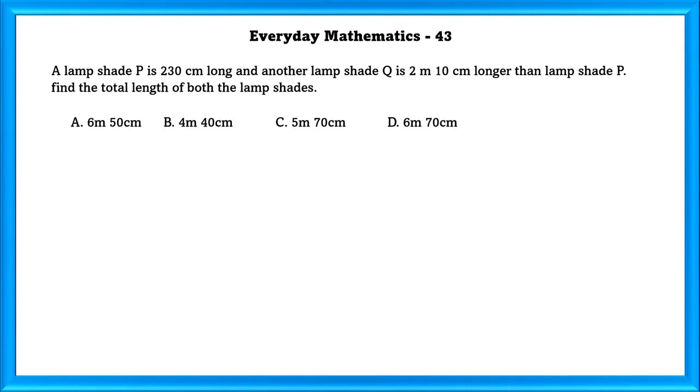Everyday Mathematics Question Number 43: A lampshade P is 230 centimeters long and another lampshade Q is 2 meters 10 centimeters longer than lampshade P. Find the total length of both the lampshades.